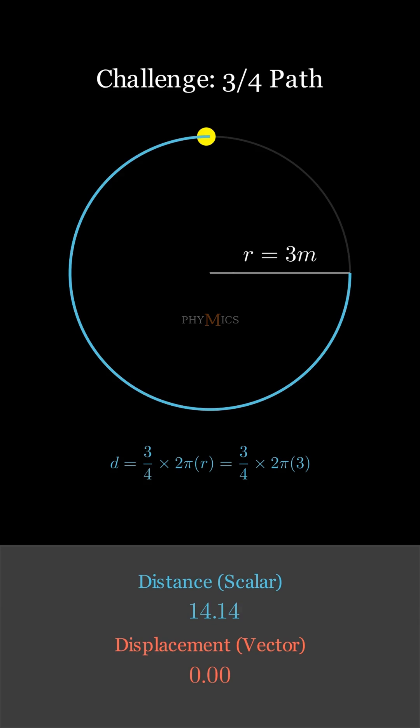For the displacement, we again have to draw a straight line between the initial and the final point. The length of the straight line will give us the displacement of the object. The length of the straight line can be found by using the Pythagoras theorem in the right angle triangle formed. Both base and perpendicular of this right angle triangle equal the radius of the circle, which is 3 meters. Therefore, upon substituting the value as 3 squared plus 3 squared under the root, we are left with displacement as 4.24 meters.